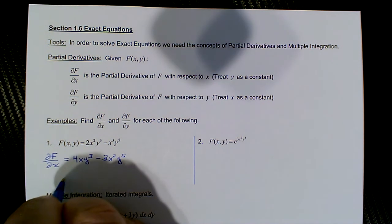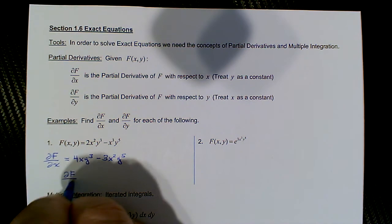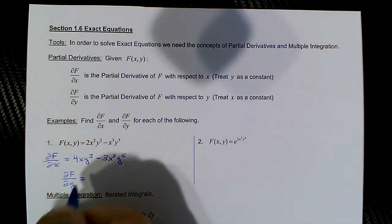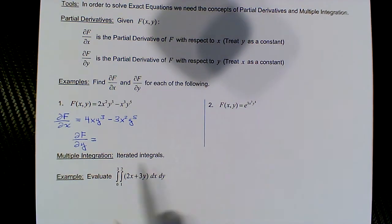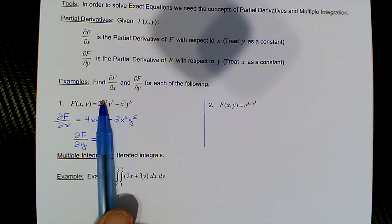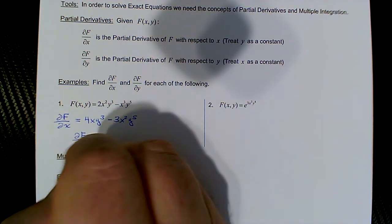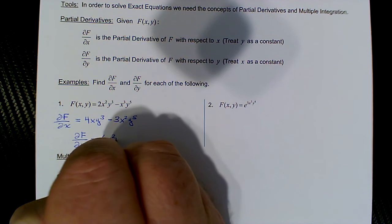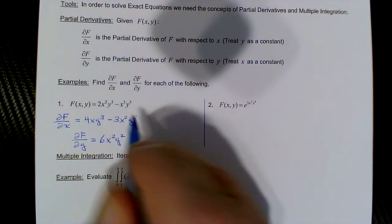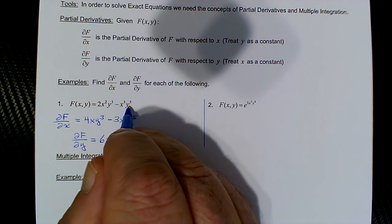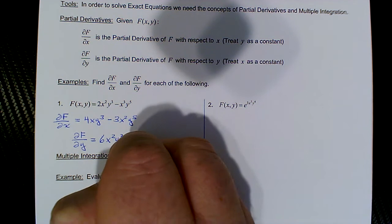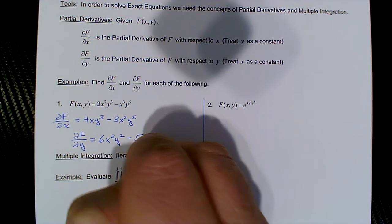That's the partial with respect to x. Now when we take it with respect to y, we're going to hold x constant. Here we're differentiating y³ and we get 3y², so times the 2 would be 6y², but then we have the x² tagging along, so 6x²y². And then here −x³ is the constant multiple, and the derivative of y⁵ is 5y⁴, so we'd have −5x³y⁴.